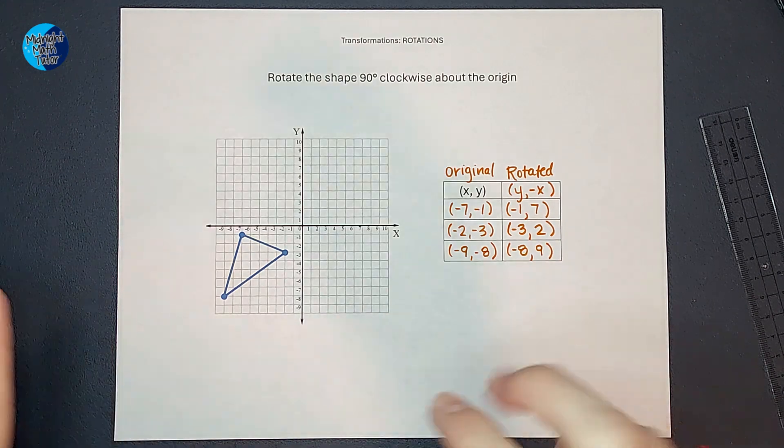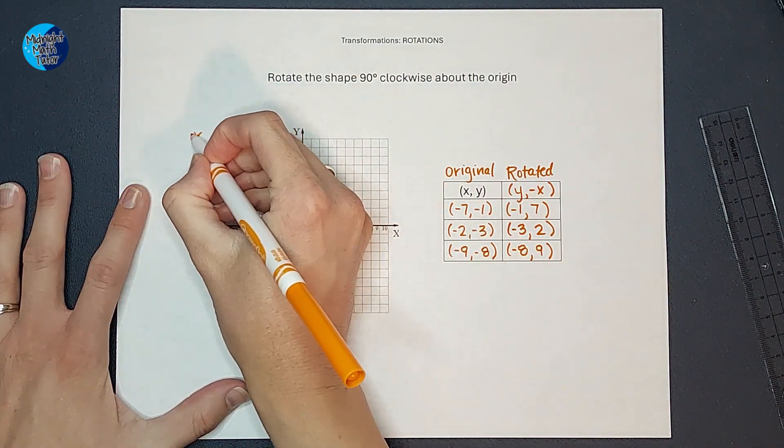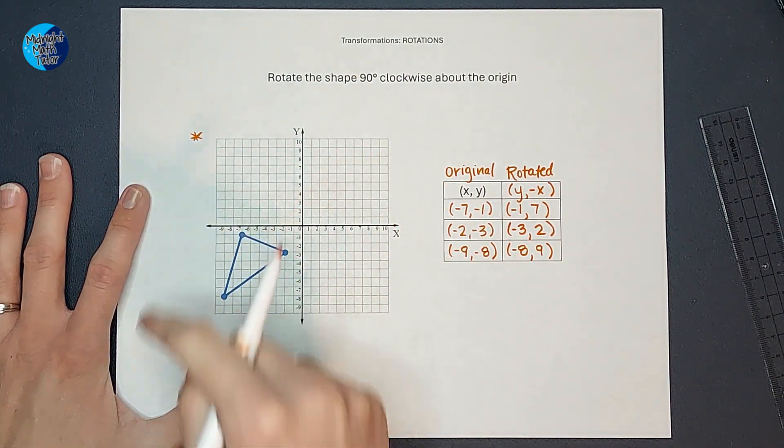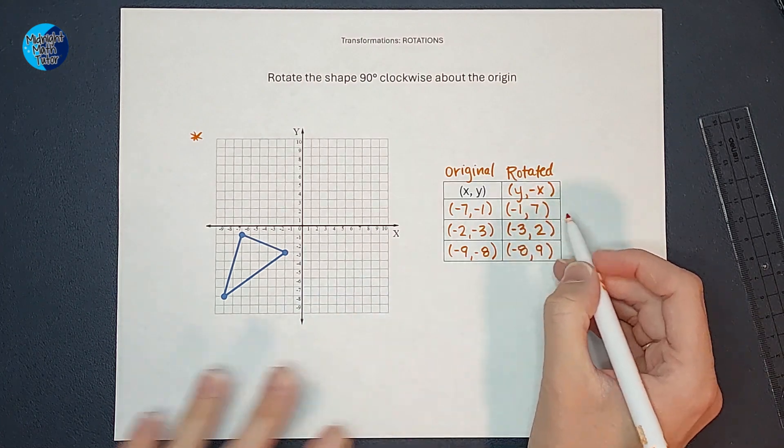Now, I always kind of like to stop and think, if I'm rotating it 90 degrees, I'm thinking it should end up in this quadrant, right? So if it doesn't end up there, I'm going to need to check my work. So let's go ahead and plot these points.